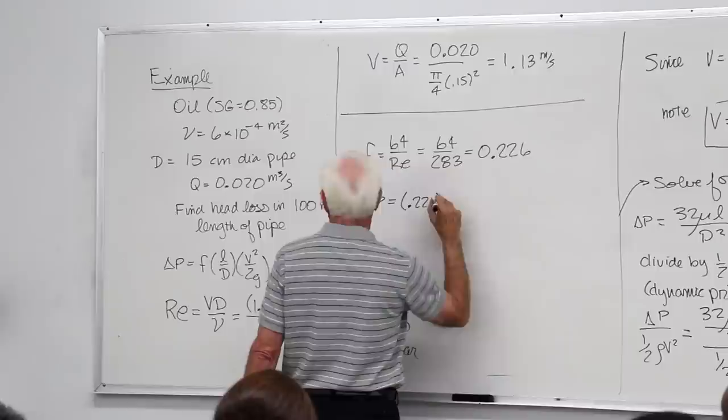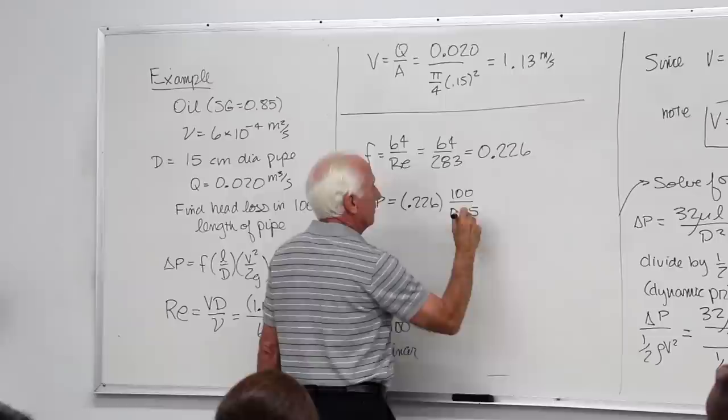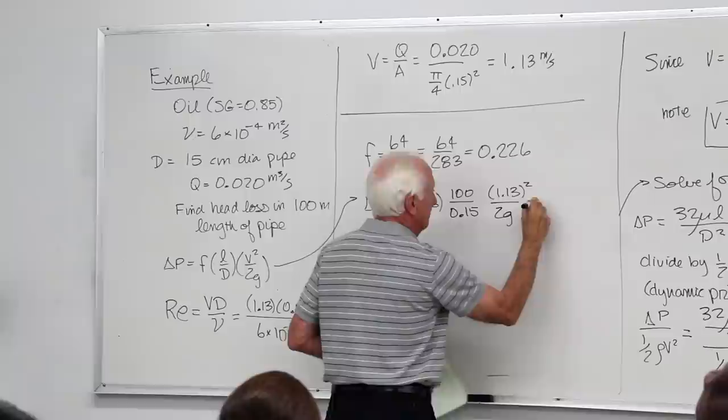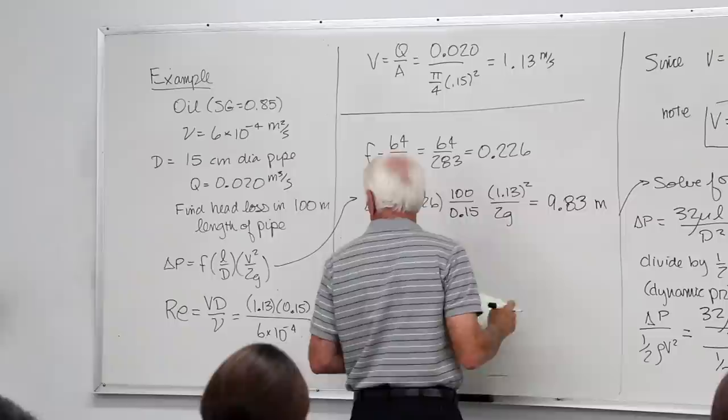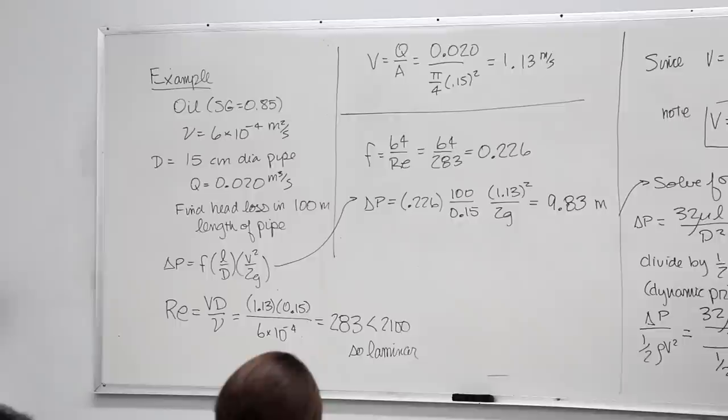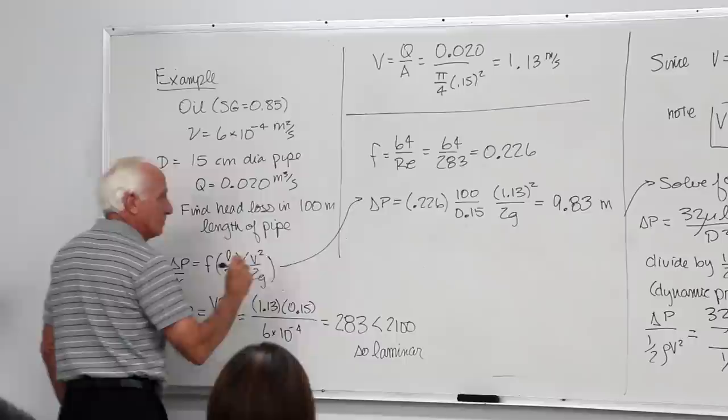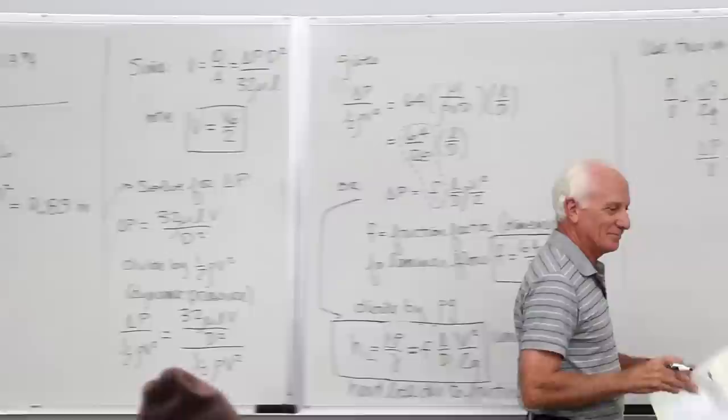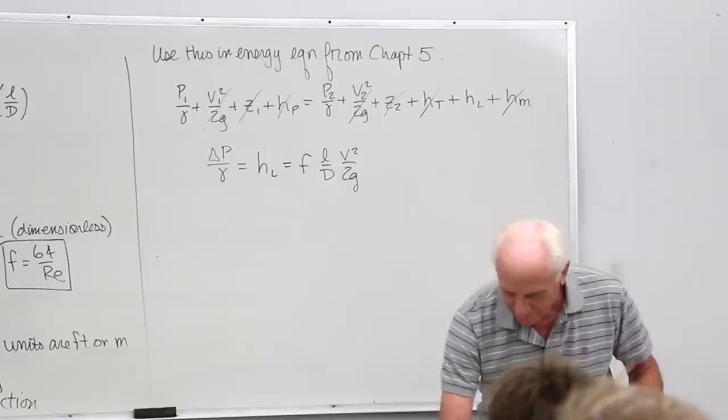Now I plug it into the delta P equation. Friction factor 0.226, the length of the pipe 100 meters, the diameter 0.15 meters. 1.13 squared divided by 2G. 9.83 meters. So laminar flow, that's how we get that.